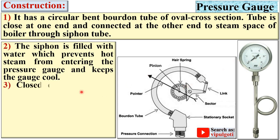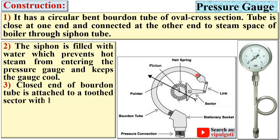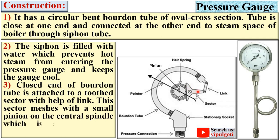The closed end of the Bourdon tube is attached to a tooth sector with the help of a link. This sector meshes with a small pinion on the central spindle, which is attached to the pointer.